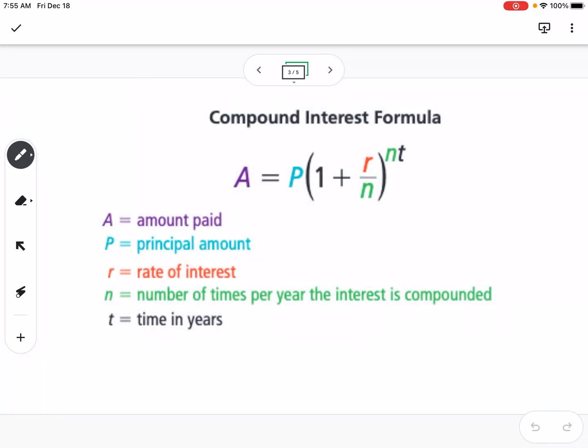So the next thing that we're going to talk about is the compound interest formula. This is a formula that can be used like if you put money into a savings account. There's also things you can invest in called CDs, certificates of deposit. The formula is A = P(1 + r/n)^(nt). P for principal means your initial amount, r is rate of interest as a decimal.